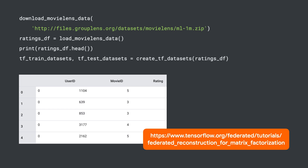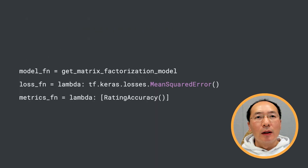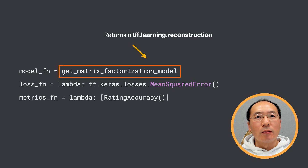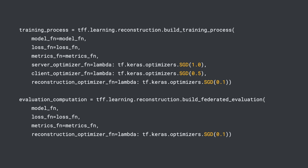Let's walk through some code to demo this. We first load the familiar MovieLens dataset and split it into training and test datasets. Then we define the model loss and matrix functions. The get matrix factorization model function here returns a tff.learning.reconstruction.model. We won't go into the details of this helper function, but you should know that it defines which variables are globally aggregated on the server and which variables remain local, which is important for the federated reconstruction approach to work. We also use MSE as our loss and rating accuracy as our metric for training.